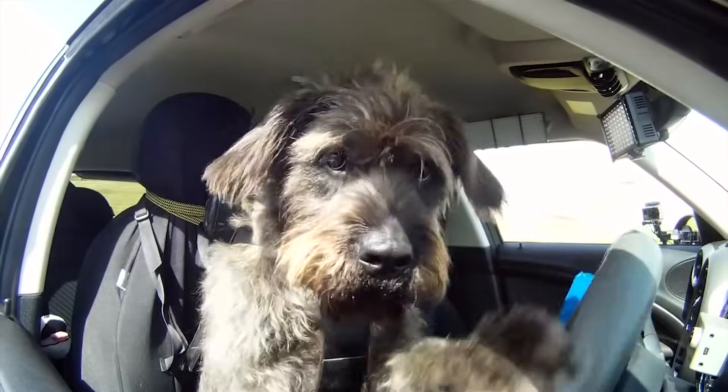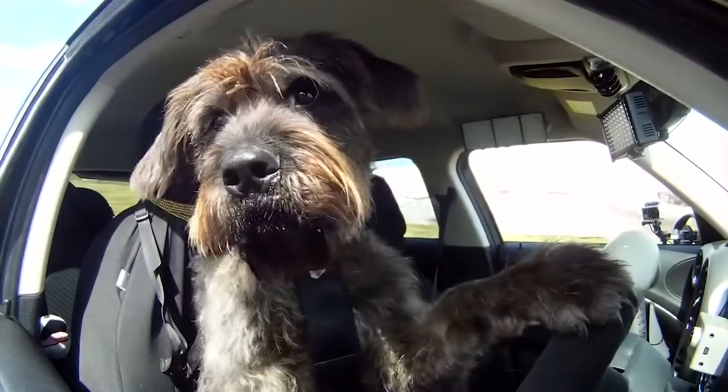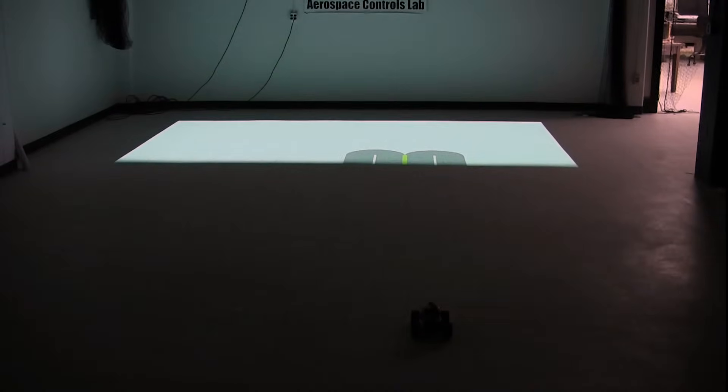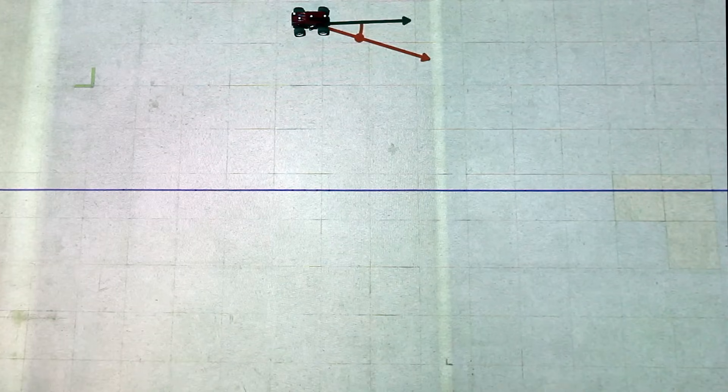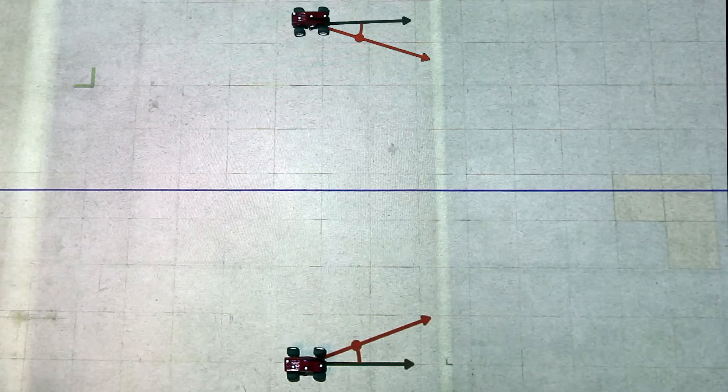Getting a vehicle to follow a trajectory may seem simple to those who have driven before, but is it? Let's take a deeper look at this in a lab setting. If we want to follow a line, but we are too far to the left, we turn to the right, and vice versa. But how much do we turn?